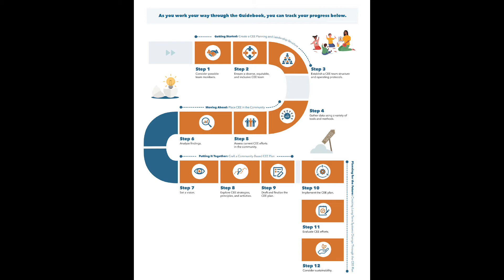We hope that you find these steps useful, whether your community is just getting started or already has a Coordinated Eligibility and Enrollment system in place that you want to enhance or expand. Feel free to use the steps in ways that fit what is happening in your community. For example, you can go through them in a step-by-step fashion as a way to get started or refine your system, or you can jump to a specific section you wish to focus on and work from there.